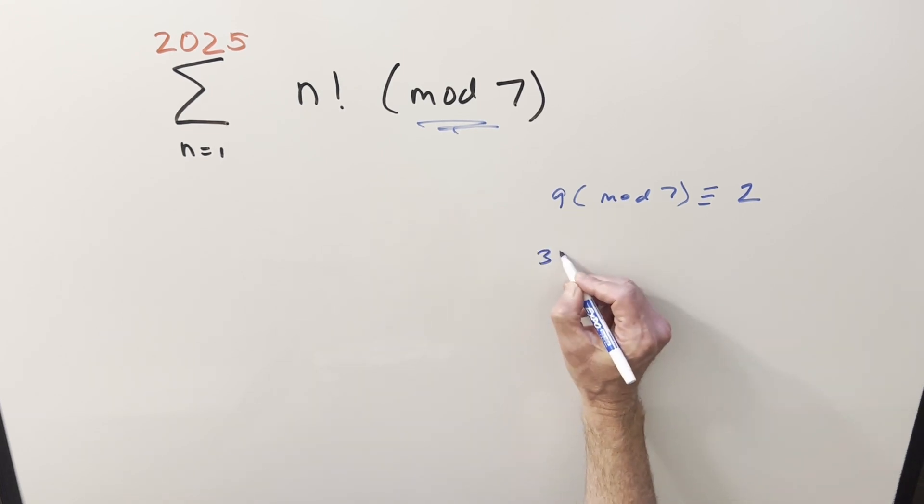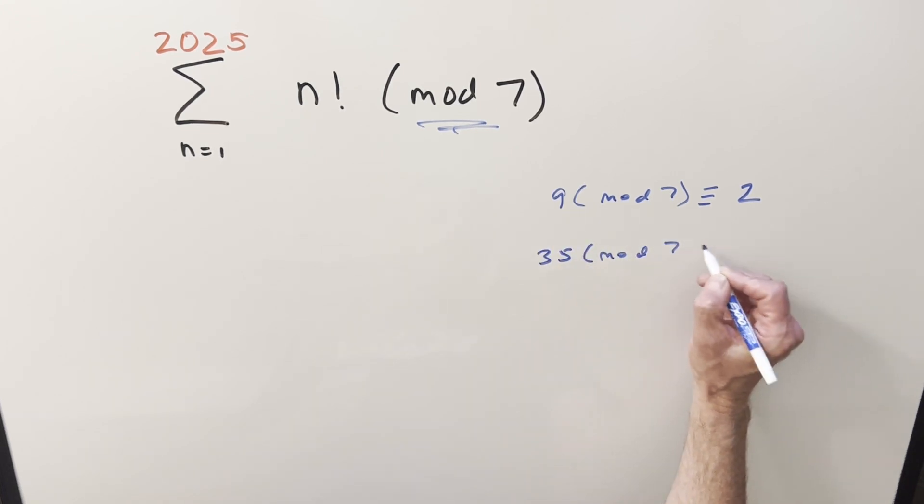And if you had something like 35 mod 7 this is just going to be 0 because 7 divides into 35 so we get no remainder here. And so for the solution we don't really care how many times it divides into this for this kind of problem. We just want to know really what the remainder is.